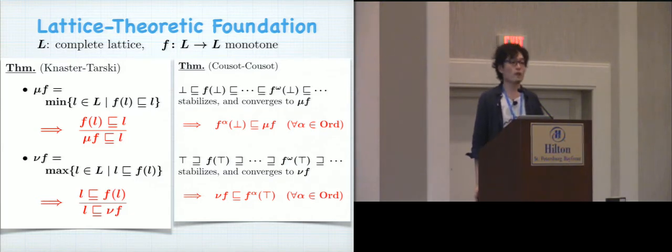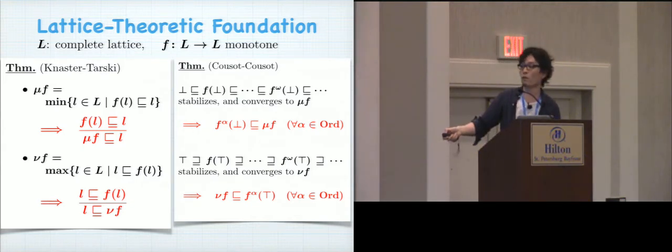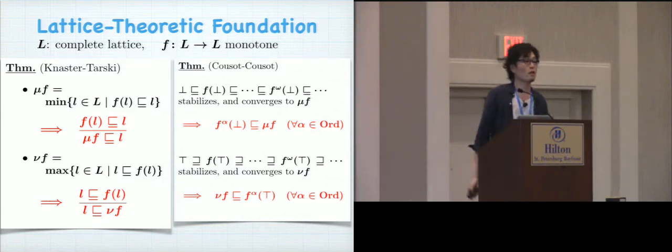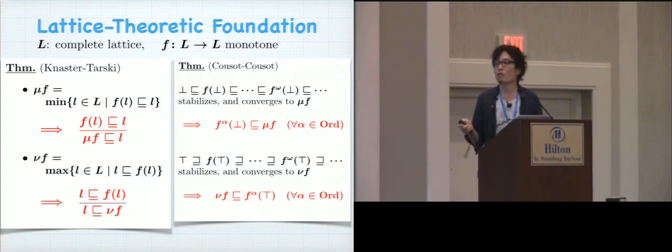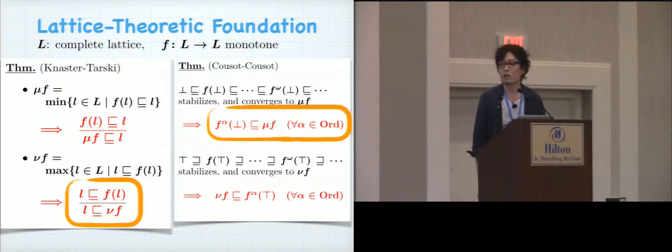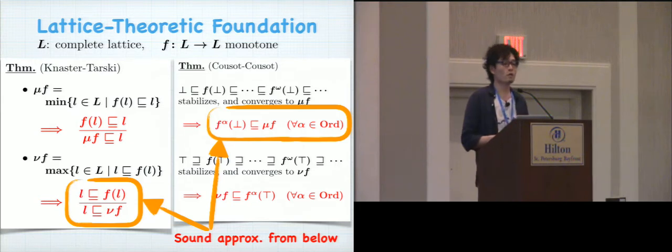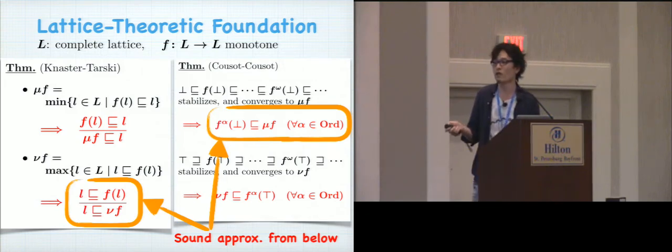But then, these again give rise to proof principles. Here, every approximate in this sequence is below the limit mu of F. Whereas here, you start from the top and then you go down. Therefore, your approximate is always above mu of F. And so this results in four principles. But then, for the purpose of verification, actually there are only two which are relevant to us. Because in verification, after all, we are looking for under approximation, sound approximation from below. So upper or lower depends on the definition of order. But anyway, so these two are the only relevant ones.